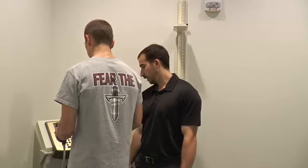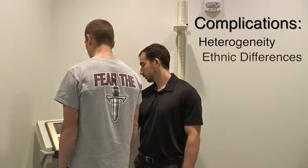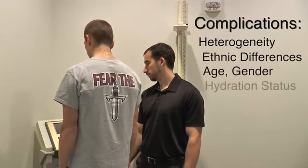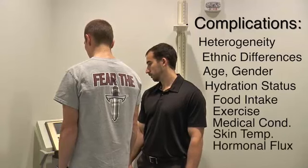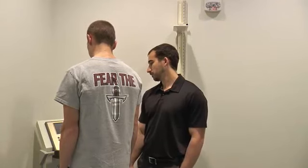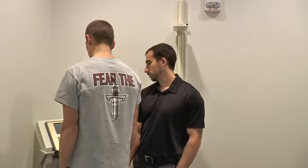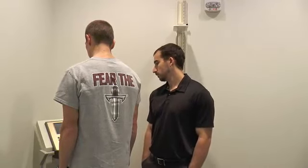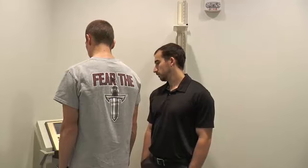However, BIA accuracy is complicated by many factors, including heterogeneity in body compartments and ionic composition, influence of ethnic differences in body composition, age, gender, hydration status, food intake, exercise, certain medical conditions, skin temperature, hormonal fluctuation, and fat distribution pattern. The equations are population-specific and may not apply to individual subjects or population subgroups. Some machines do include race as a factor in the predictive equation. Prior to the test, subjects must avoid alcohol and exercise. During the test, subjects must assume proper posture and have no metal objects such as belt buckles or coins in their pockets. Although this is a quick, relatively inexpensive field method for measuring body fat, it consistently overestimates lean people and underestimates obese people.